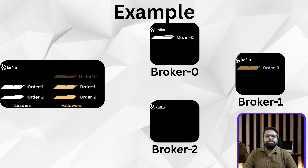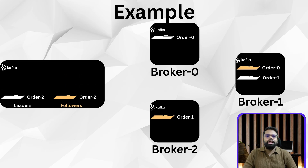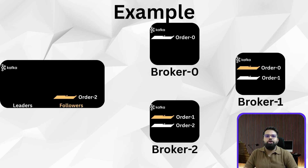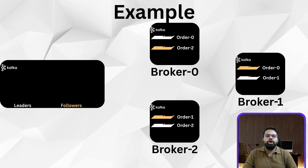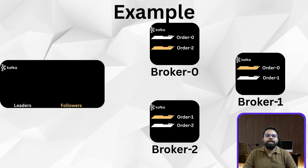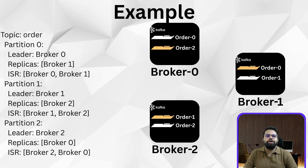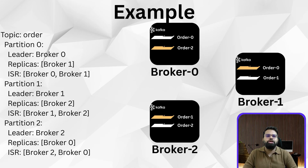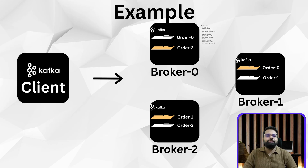Suppose you create a topic called 'orders' with three partitions and a replication factor of two. Kafka needs to create a total of six partition replicas — three leaders and three followers. Each partition has a primary broker, the leader, and a replica, the follower, stored on a different broker. Kafka then assigns these partitions across the brokers in your cluster, automatically updating its internal metadata so that any producer or consumer knows exactly where each partition lives.